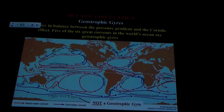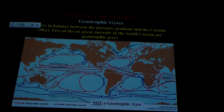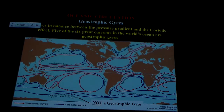And we looked at these patterns and we found that we had five gyres — these circular patterns. These patterns here in the North Atlantic, South Atlantic, North Pacific, South Pacific, and Indian Ocean, where we have these circular currents in the ocean.